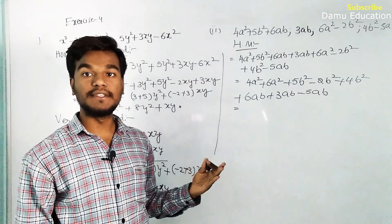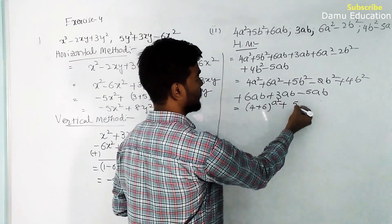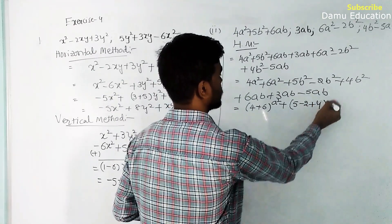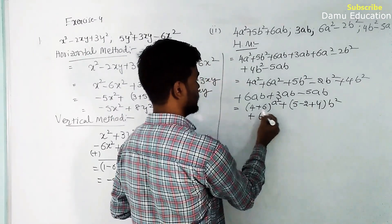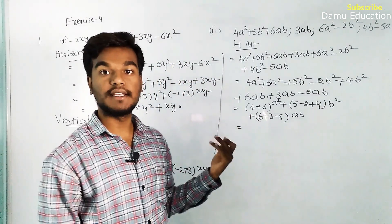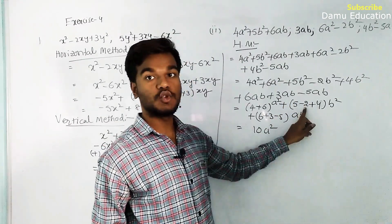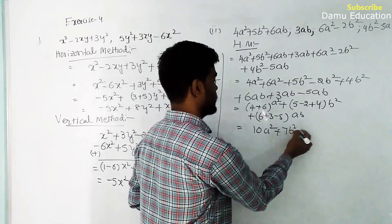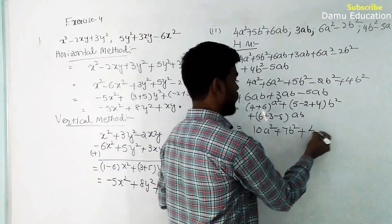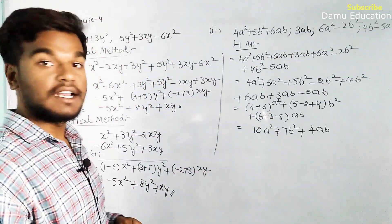Taking common numerical coefficients: 4 plus 6 gives 10a². For b²: 5 minus 2 gives 3, plus 4 gives 7b². For ab: 6 plus 3 gives 9, minus 5 gives 4ab. So the horizontal method answer is 10a² plus 7b² plus 4ab.